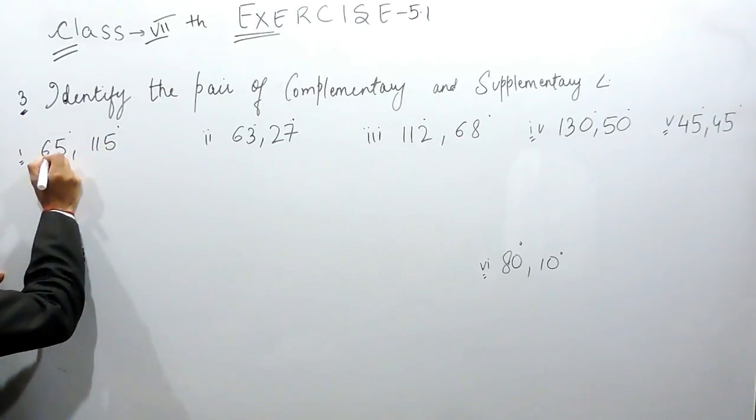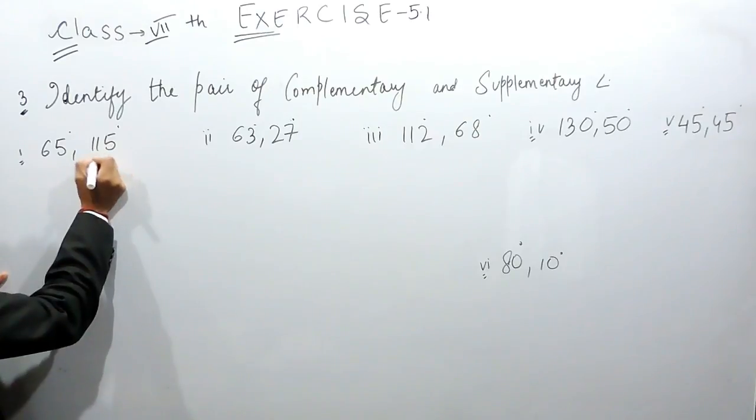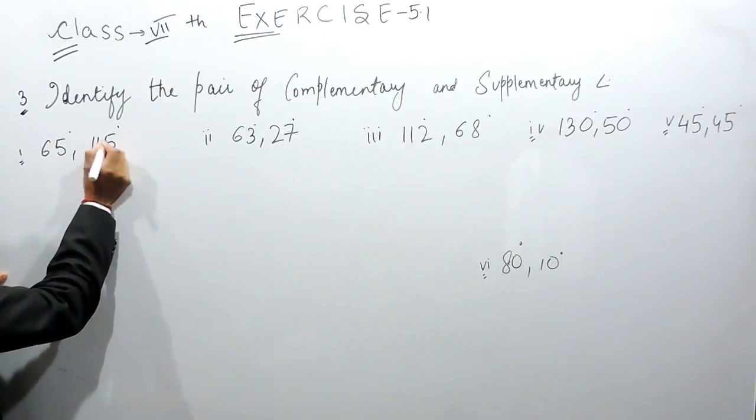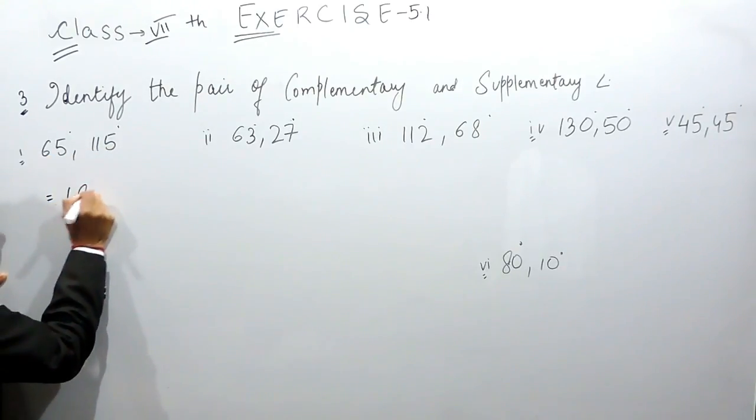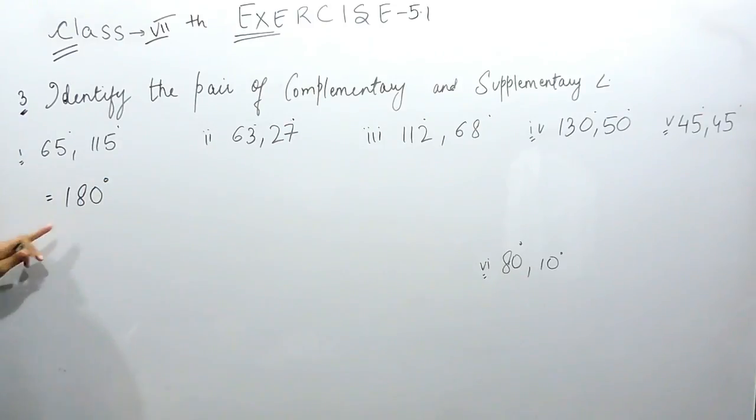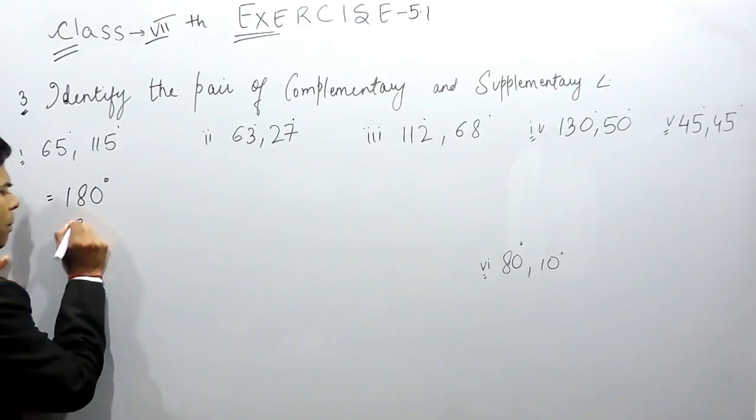So 65 plus 115, that is 60, 70, 80. So the total will be 80 plus 100, 180 degrees. So it will be supplementary angle.